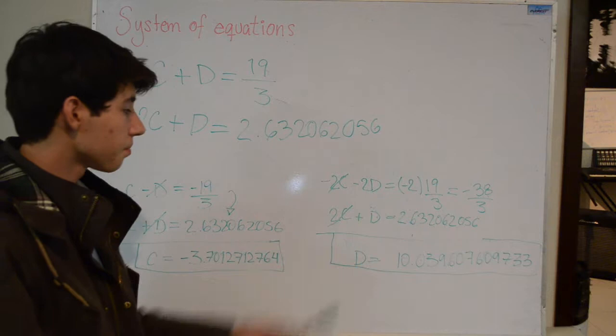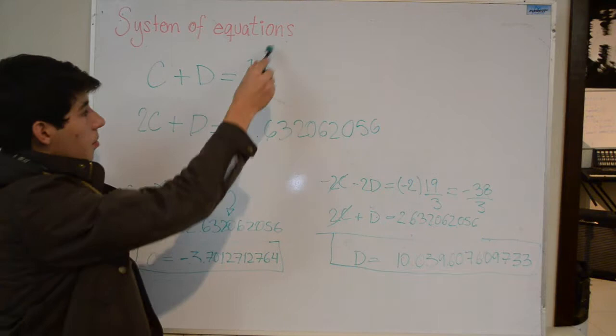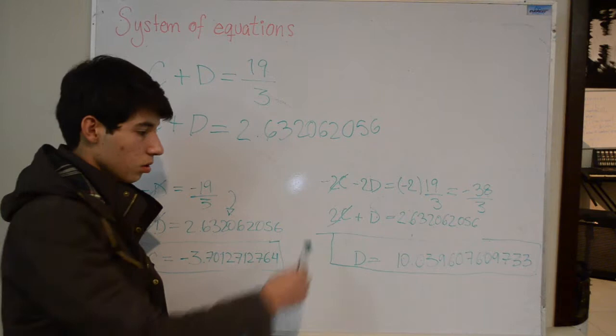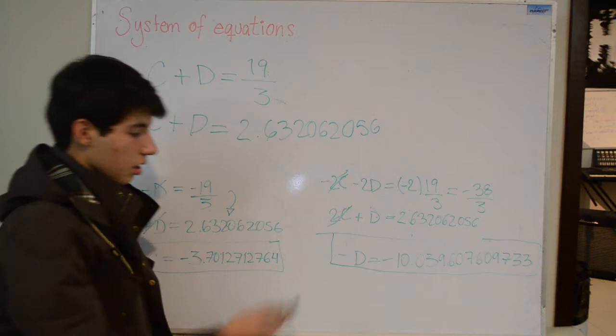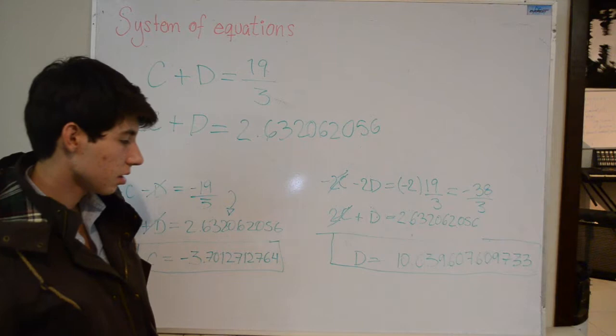So our next system of equations is for solving d. We have here 2c, so we want to get rid of that 2c. And we do that by multiplying everything of this equation by minus 2. We add that with 2c plus d equals 2.63, and we end up with minus d equals minus 10.0396076097. And we just cancel these minus signs and we get d equals 10.03.